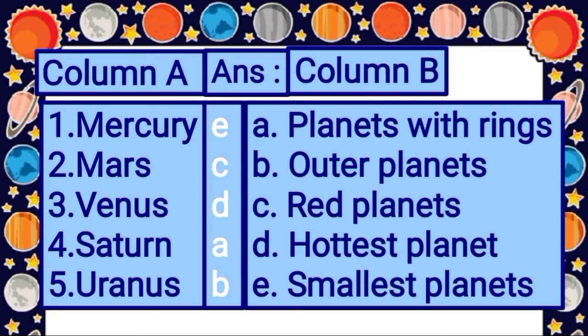Second word from column A is Mars. As you know, Mars is the fourth planet and it is also called the red planet because the soil and rocks on this planet are red. Answer is option C: red planet.